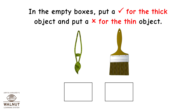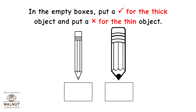In the empty boxes, put a tick mark for the thick object and put a cross mark for the thin object.